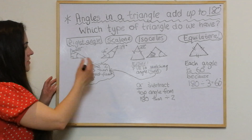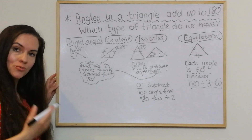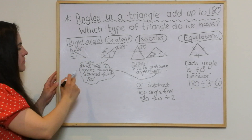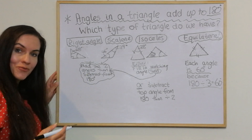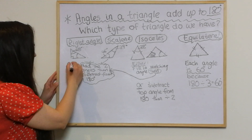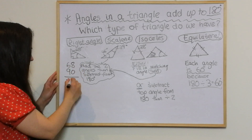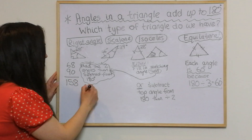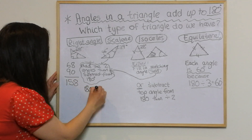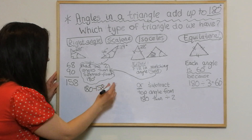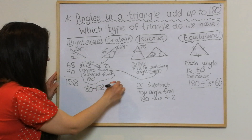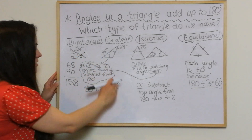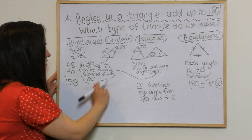Now let's try some other examples with different numbers. This time I've got a right angle triangle because the right angle is filled in. I just add the two angles then subtract from 180: 68 add 90 gives me 158, and then 180 take away 158 gives me 22 degrees. So that angle there is 22 degrees.